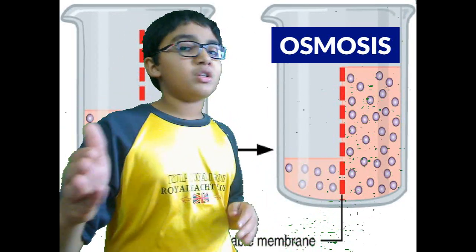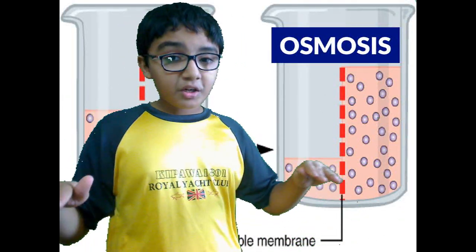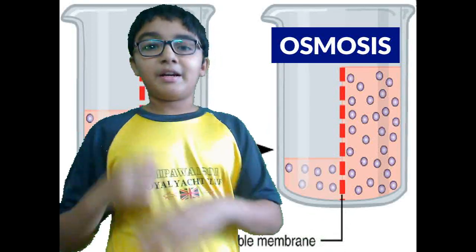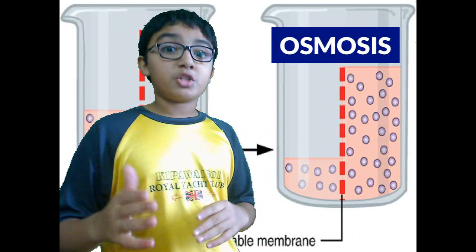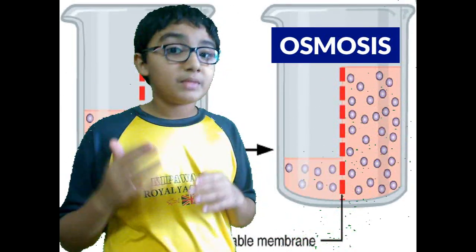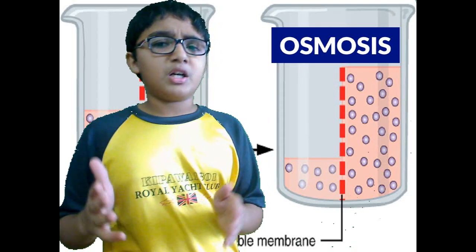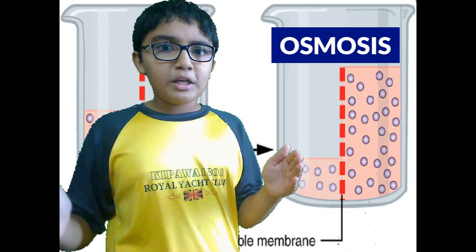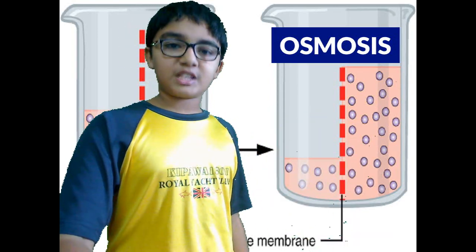So now you know what diffusion is and you know what osmosis is. If you enjoyed this, give a thumbs up and write any questions you have in the comments. Thanks for watching — and remember, watch my next video on why snails die when you pour salt on them, because it's because of osmosis. I'll explain it to you in the next video. Thank you.